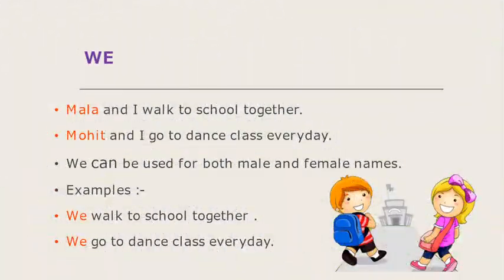Next is 'we.' Mala and I walk to school together. Mohit and I go to dance class every day. Here, in these two sentences, I am not alone — I am talking about someone else. Whenever I am talking about someone else and I am not alone, then instead of that, I will use the word 'we.' We walk to school together. Instead of Mala and I, I am using 'we.'